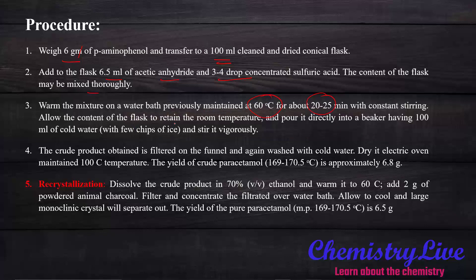Allow the flask to reach room temperature and pour it directly into a beaker with 100 ml of cold water with a few chips of ice and stir vigorously. The crude product is obtained by filtering on the funnel and washing with cold water to remove excess acetic acid. Dry it in an electric oven at 100 degrees temperature. The crude product yield is 6.8 grams approximately and the melting point is 169 to 170.5 degrees Celsius.